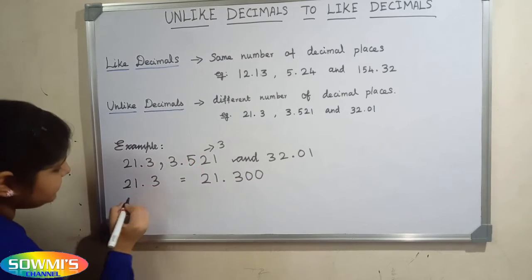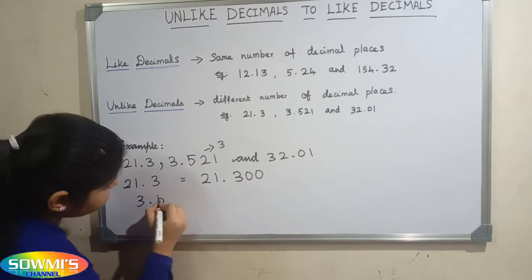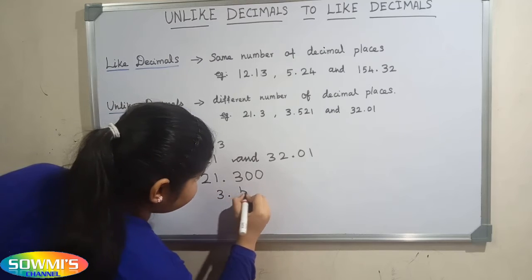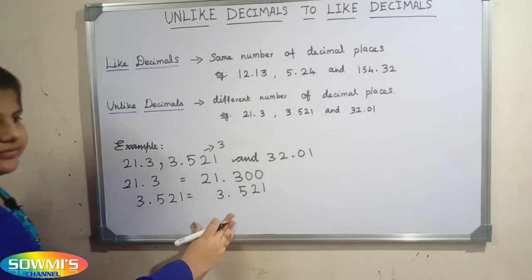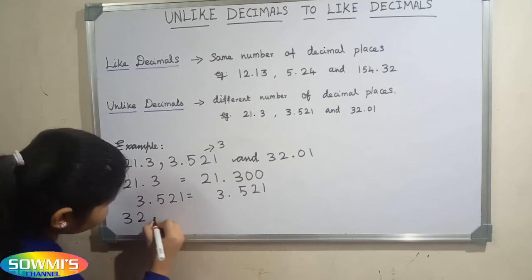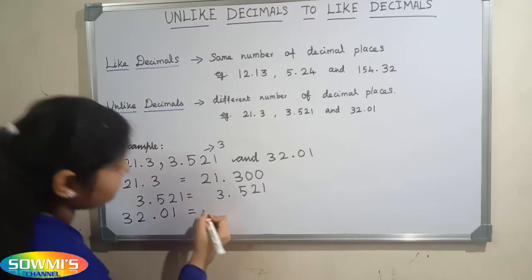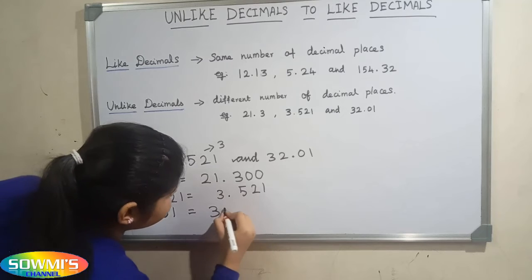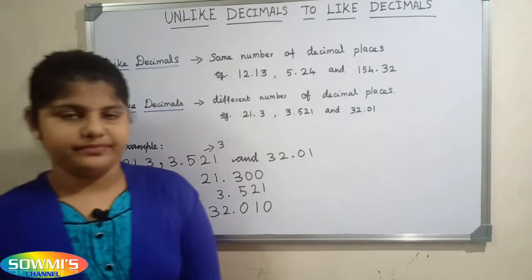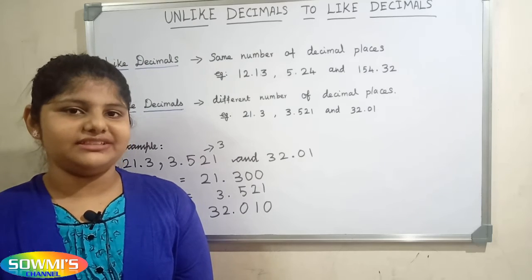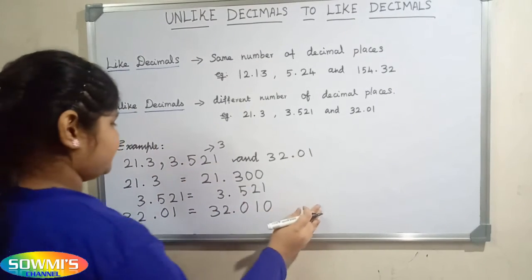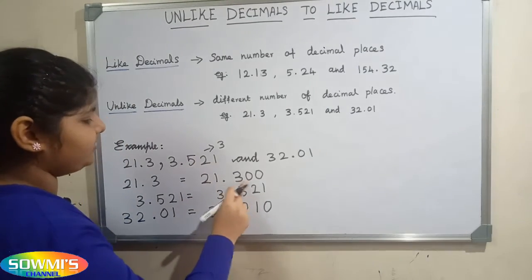3.521 is equal to 3.521. And 32.01 is equal to 32.010. When we add any number of zeros after the rightmost digit of the decimal part, the value doesn't change. So the like decimals are 21.300, 3.521, and 32.010.